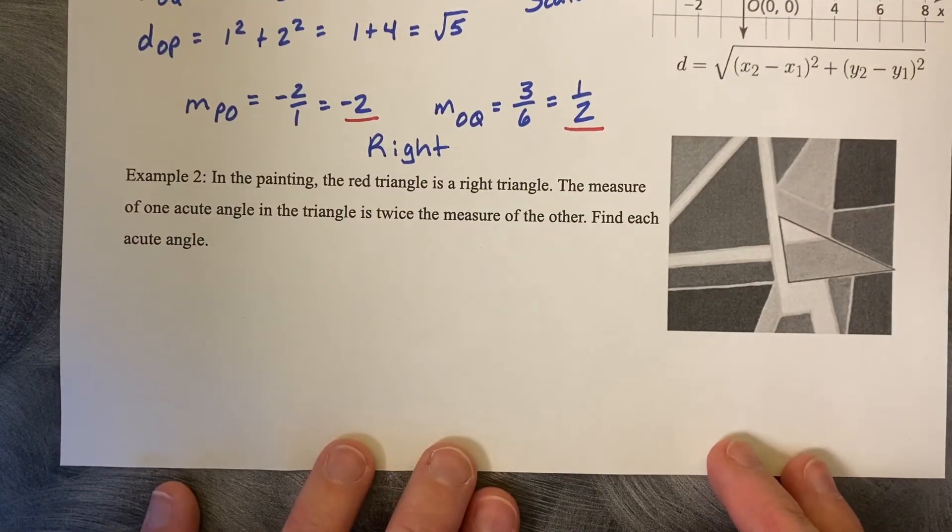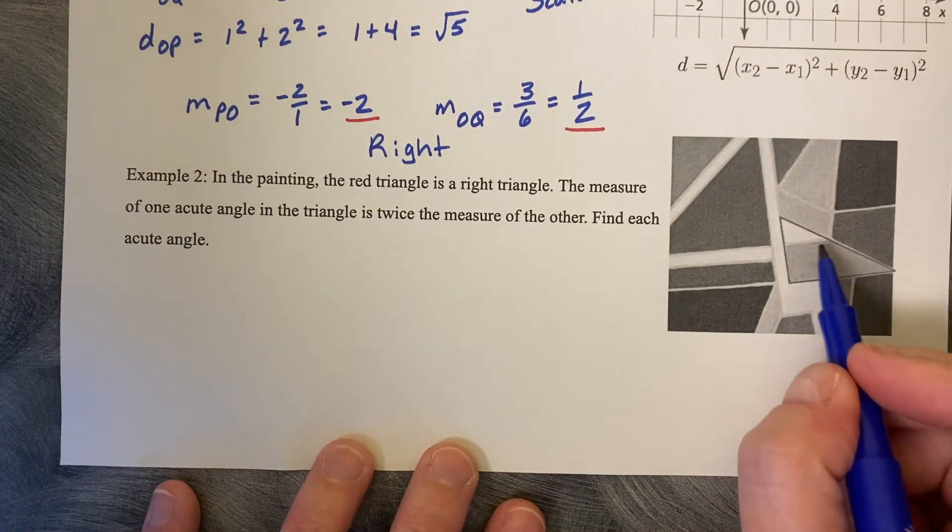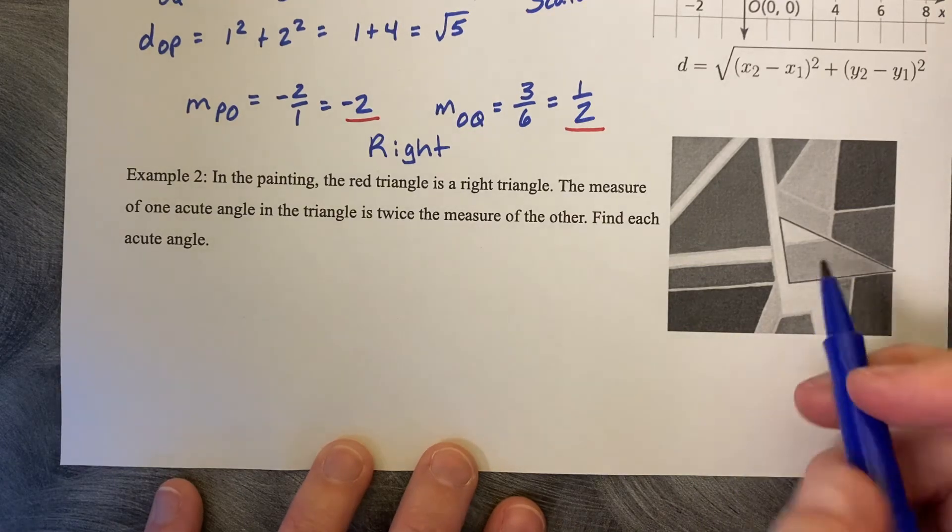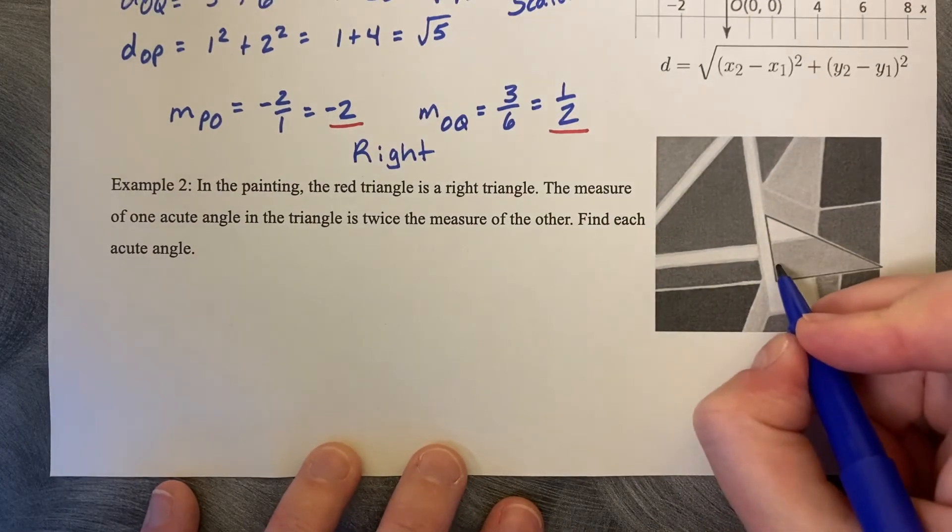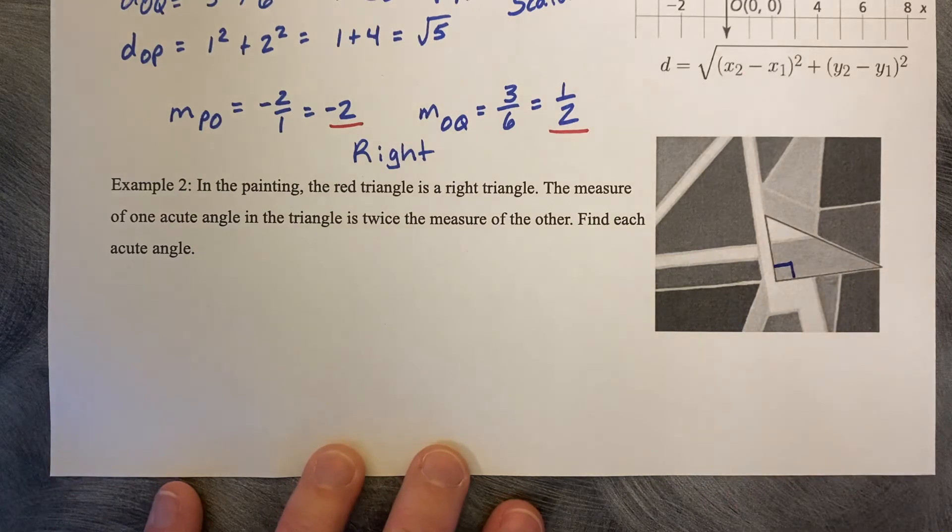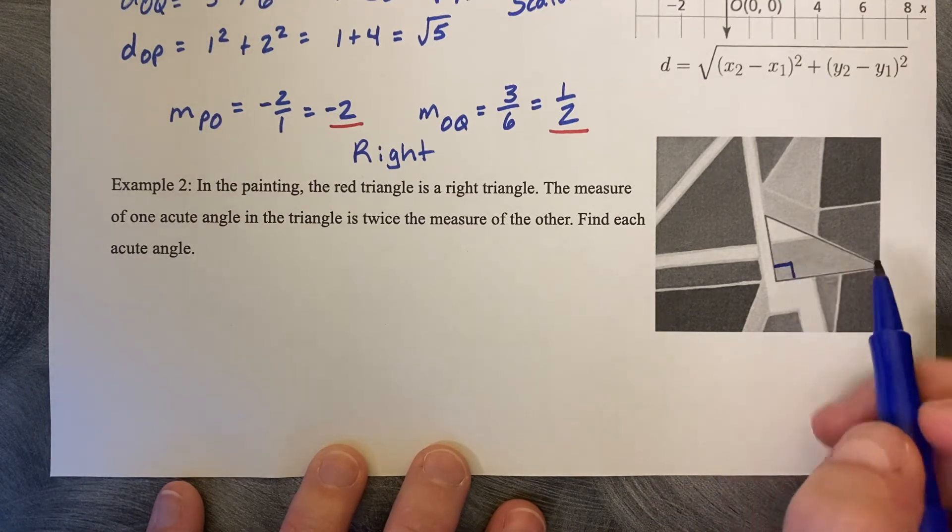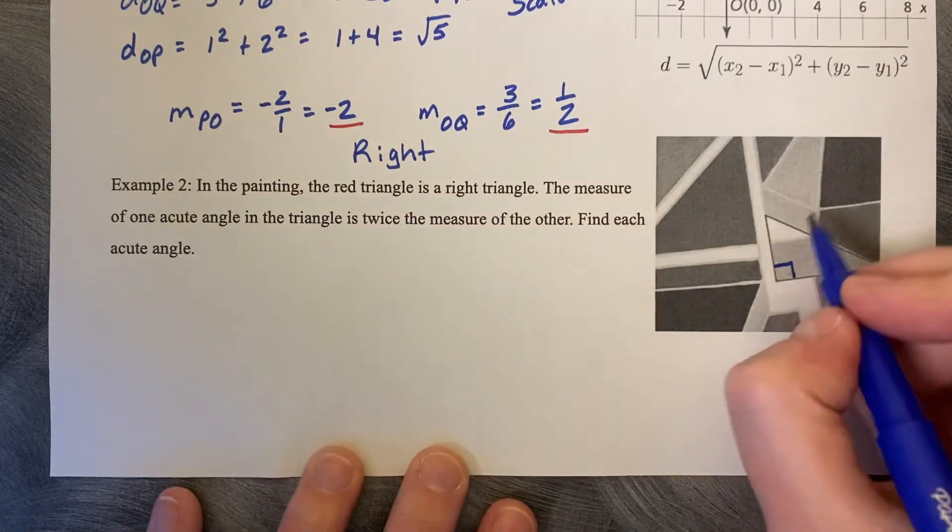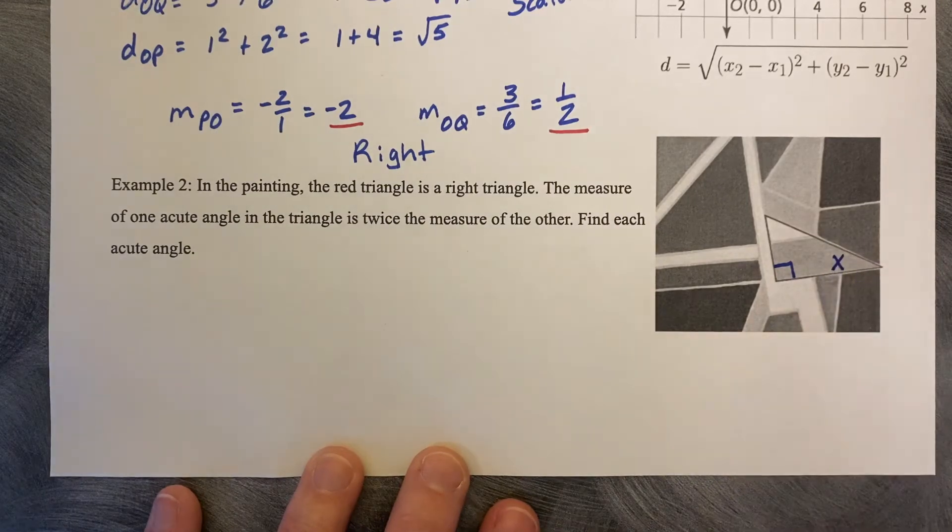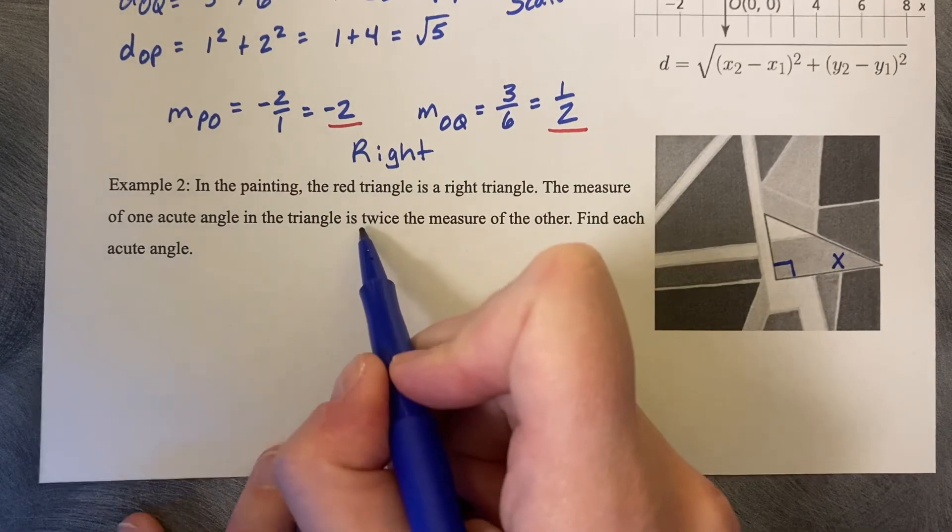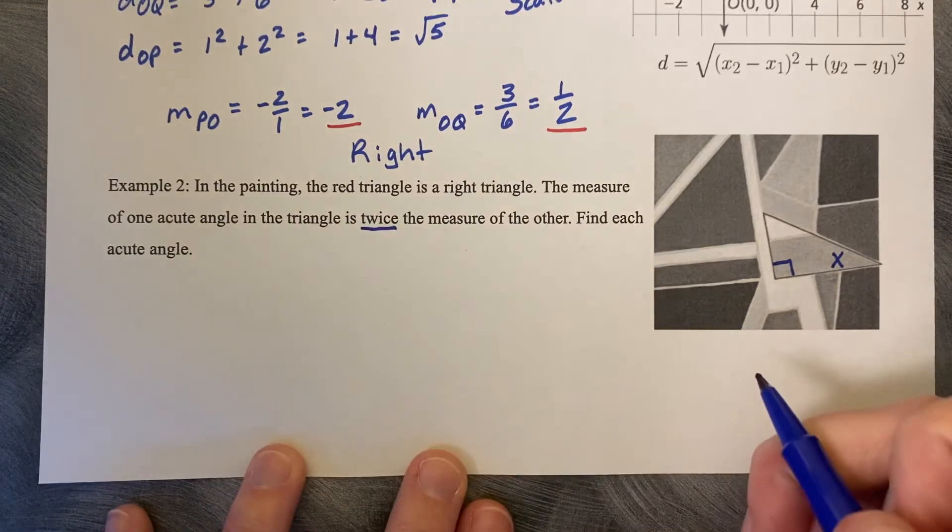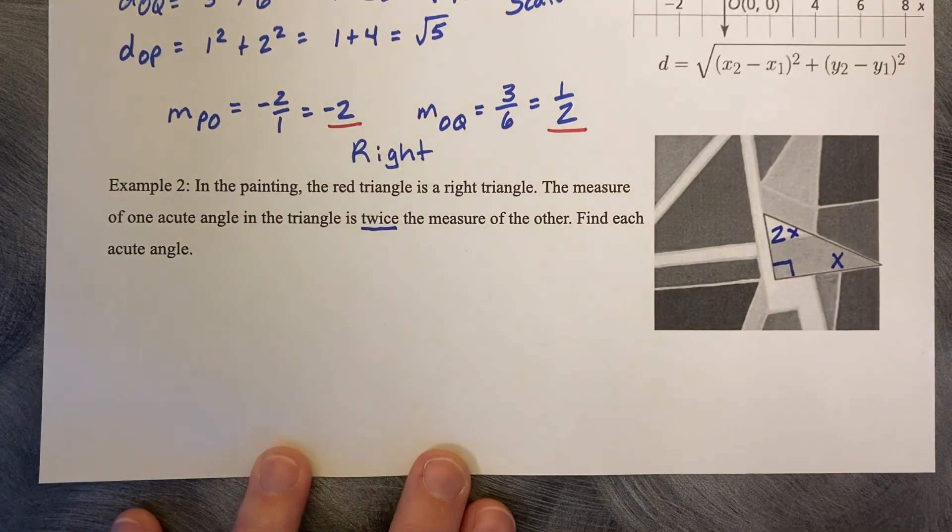Example number two. In the painting, the red triangle is a right triangle. I can kind of see on the diagram, I believe that that corner right there is the right triangle. The measure of one acute angle is twice the measure of the other. Find each acute angle. So what we can do is we can pick a variable of our choice and call one of the angles our acute angle. I'm going to call this one x. And then I know that the second angle is twice the measure of the other, so I can say 2x for this other corner.